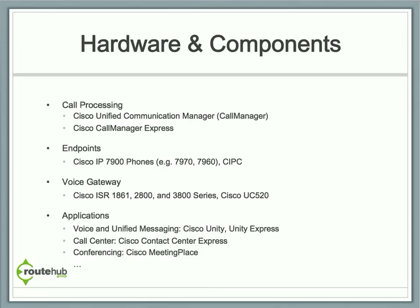Endpoints, or IP phones, are devices that an end user will have with their associated phone number. Some hardware examples are the Cisco IP 7970 and the 7960 models, including the Cisco IP Communicator, which is the software version of the IP phone.